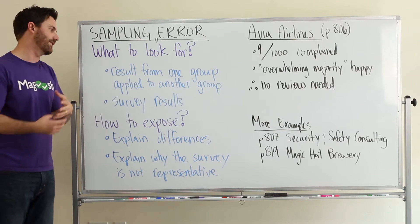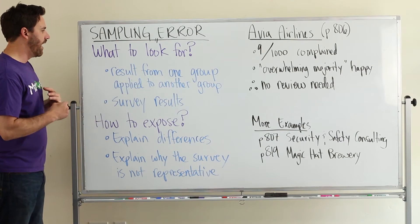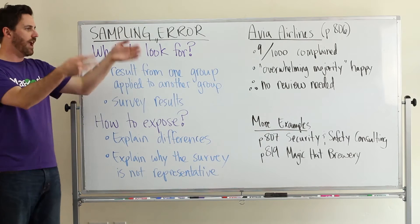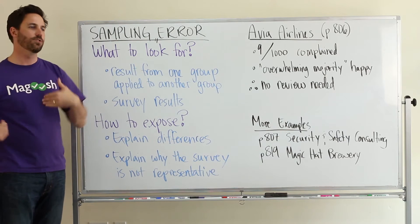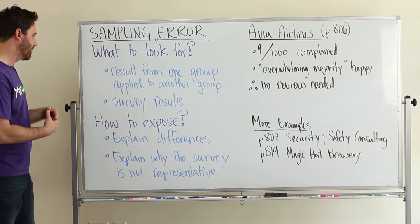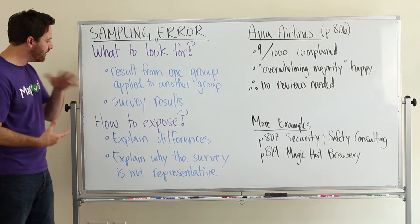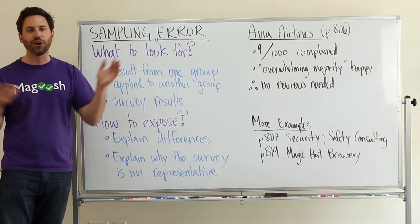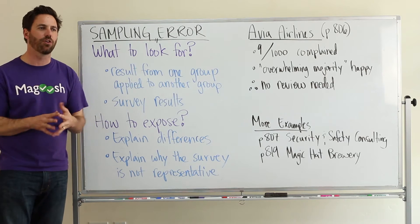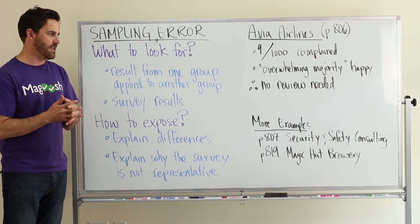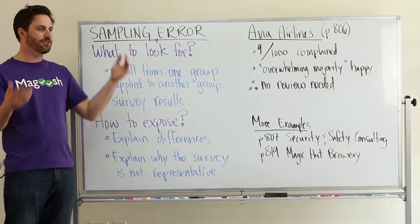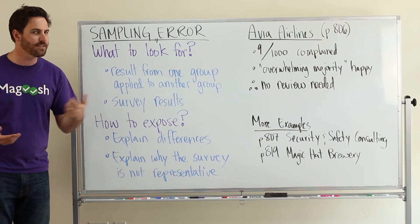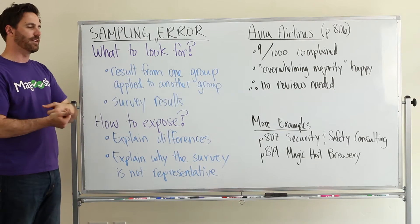or an organization, and they're applying some sort of results that they saw somewhere else to themselves. Another thing to look out for is surveys in general. If you see some sort of survey taking place, you're going to want to think: sampling error.